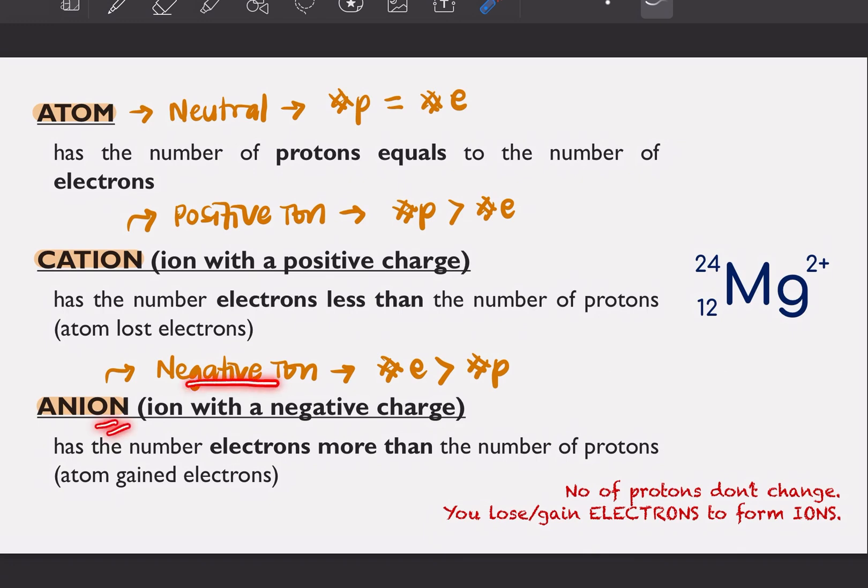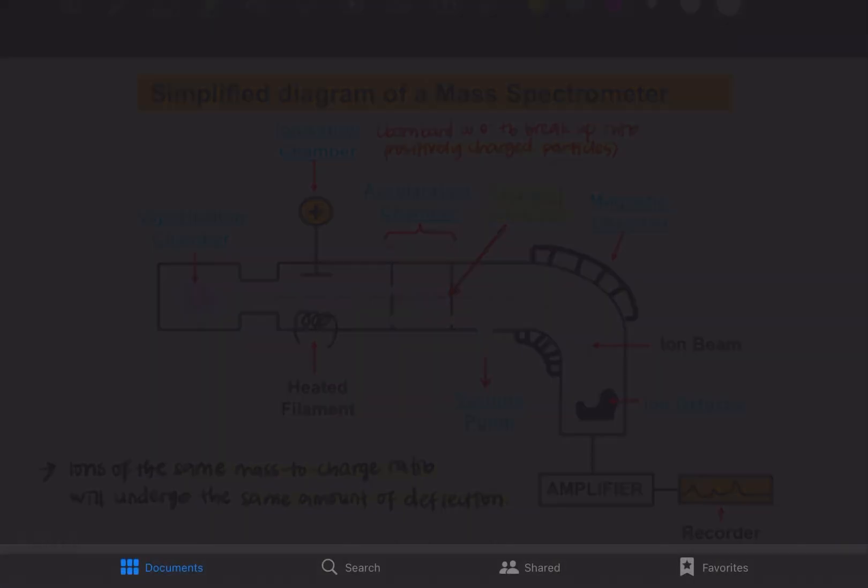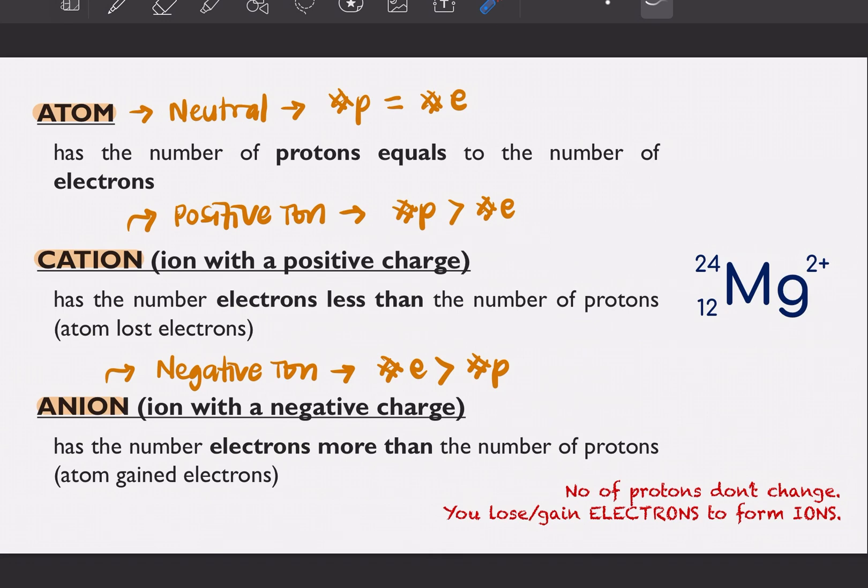Next is anion, a negative charge ion. That means you have more number of electrons than number of proton. So for anion, the number of electrons is more than the number of protons. That means that your atom has gained electrons.